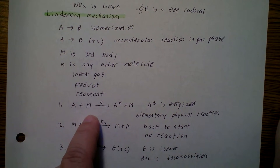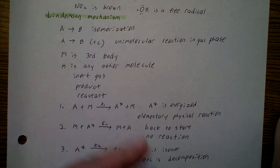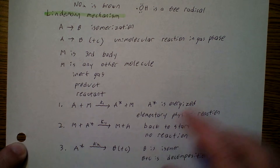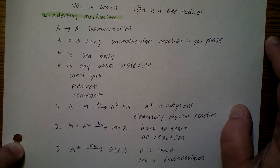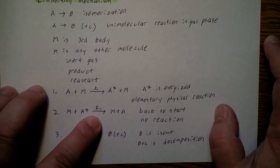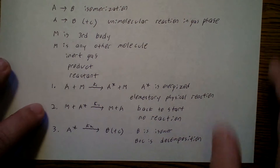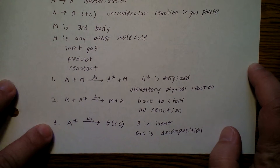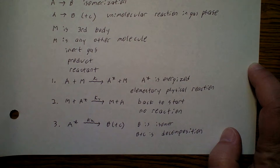So here we go. A plus M — starting out with our reactant and some other third body — there's a rate constant going to A* plus M. So A* is basically the same reactant but in a higher energy state; it's picked up energy from M. That was one elementary physical reaction, not really a chemical reaction, just transferring energy. Then the reverse reaction goes from A* back to M and A, so no actual chemical reaction. But the third possibility is that A* has a forward rate constant K2, becoming product B plus maybe C.